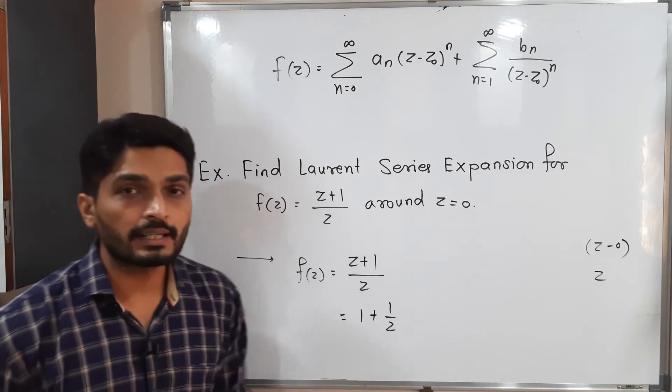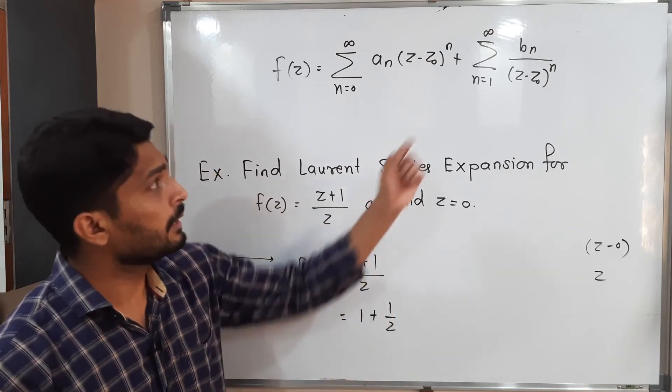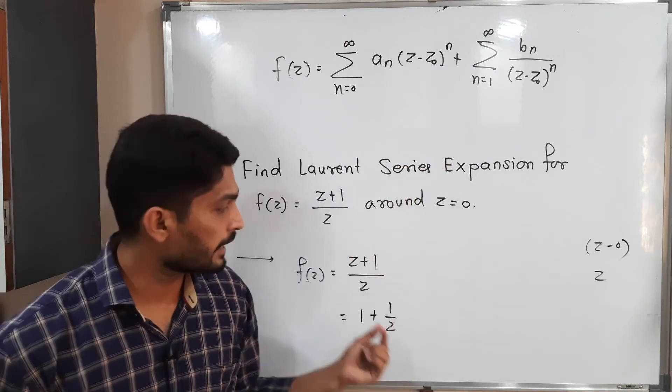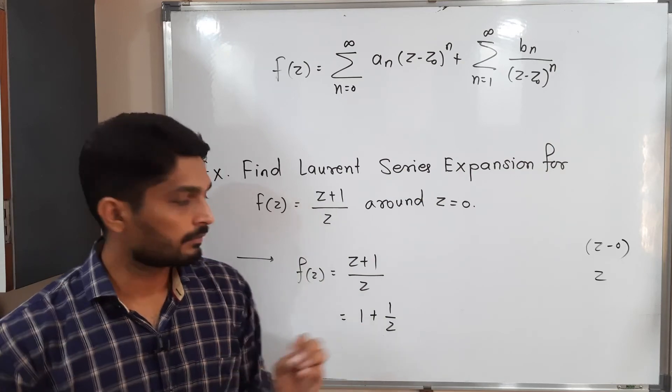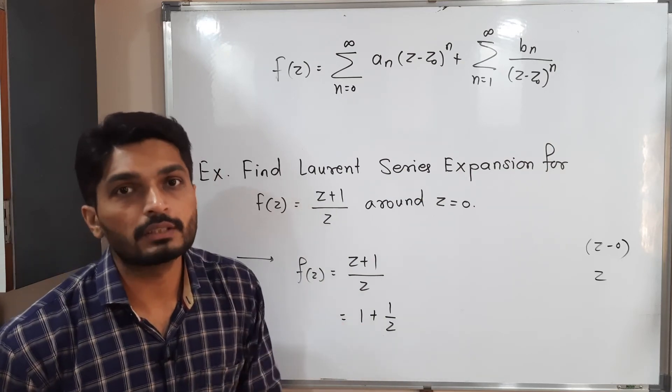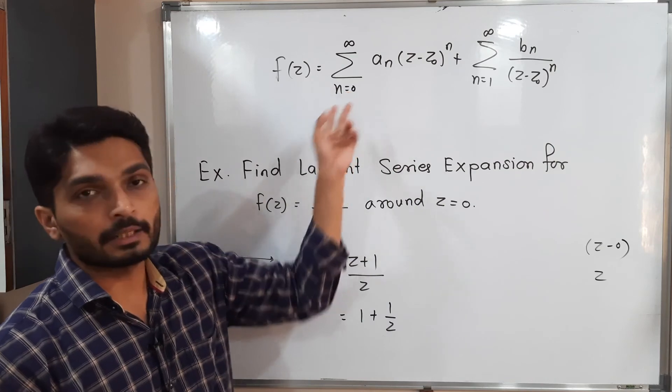As you can see here z is in denominator, so this is a principal part of a Laurent series. And 1 which is a term in numerator, this is the first analytic part of the series.